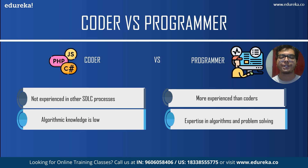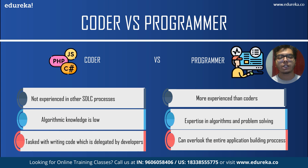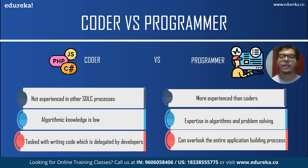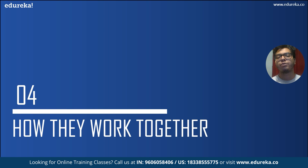The algorithmic knowledge of coders is generally low — a coder doesn't need much algorithmic knowledge — but to be a programmer you must have expertise in problem solving. A coder is tasked with writing code delegated by developers for one specific part of an application, whereas a programmer can oversee the entire application-building process.